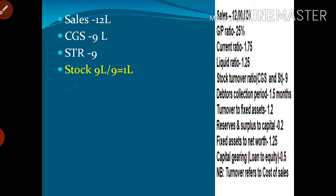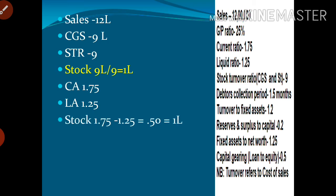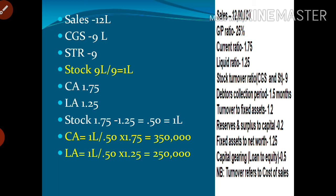The second stage is current ratio and liquid ratio. Current ratio is 1.75, meaning current assets are 1.75 times current liabilities. Liquid ratio is 1.25 to 1. Stock is the difference between current assets and liquid assets: 1.75 minus 1.25 equals 0.50. Since stock is 1 lakh, current assets equal 1 lakh divided by 0.5 multiplied by 1.75, liquid assets equal 1 lakh divided by 0.5 multiplied by 1.25, and current liabilities equal 1 lakh divided by 0.5 multiplied by 1.